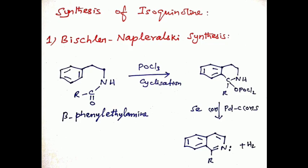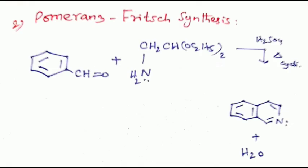Second method: Pomeranz-Fritsch synthesis. By the condensation of an aromatic aldehyde, that is benzaldehyde, with aminoacetaldehyde, followed by cyclization with sulfuric acid to form isoquinoline with loss of water molecule.